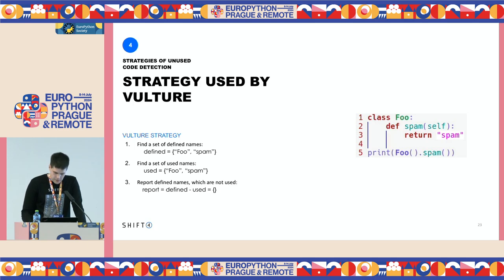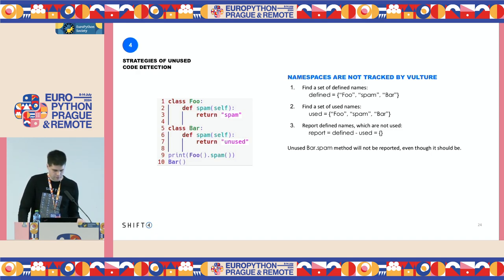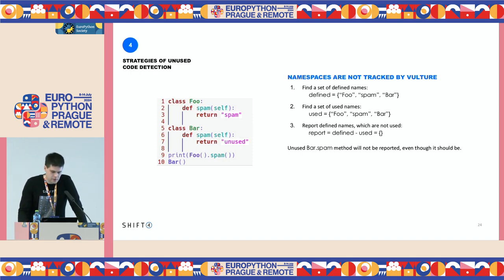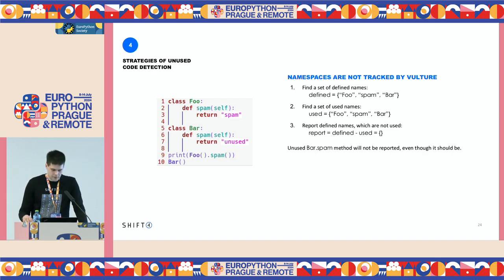Let's complicate this simple example a little bit by adding an additional class. This class is Bar, and it has a single method, spam — the same name as the method of the Foo class. Executing those three steps again: in the first step we find foo, spam, and bar definitions; in the second step we find foo, spam, and bar usages; and as a result, nothing will be reported — even though Bar's spam method was not used. This is because Vulture doesn't take namespace into account.